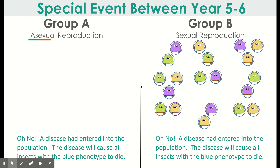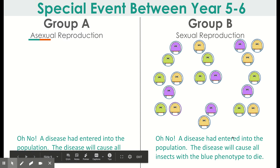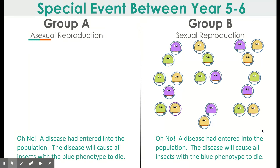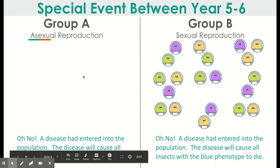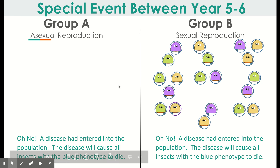A special event occurs between year five and six. Oh no — a disease has entered into the population. The disease will cause all insects with a blue phenotype to die. You're going to notice that something very different happens between group A and group B. You'll be able to figure out some disadvantages and advantages of each of these reproducing strategies and make conclusions at the end of the lab.